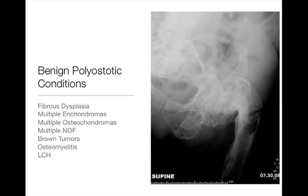Certainly fibrous dysplasia — it's not that uncommon, and there are polyostatic forms. Multiple enchondromas is a much rarer condition; single solitary enchondromas are pretty common in themselves, but the multiple enchondroma syndromes are quite rare. Multiple osteochondromas — again, a single osteochondroma is not an uncommon lesion, but multiple osteochondromas, or hereditary multiple exostosis, is a much less common disease.